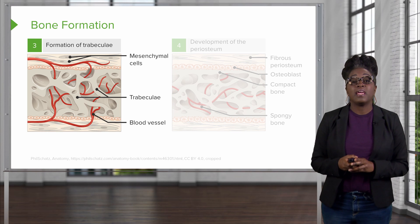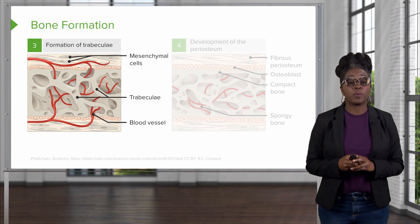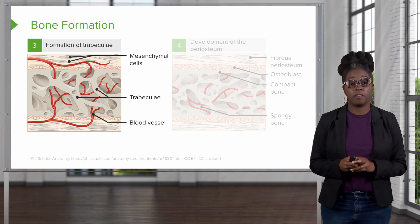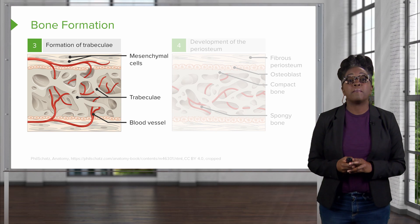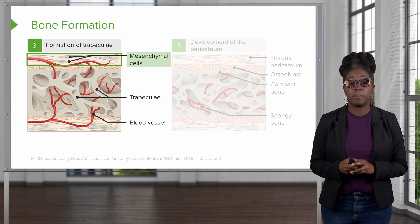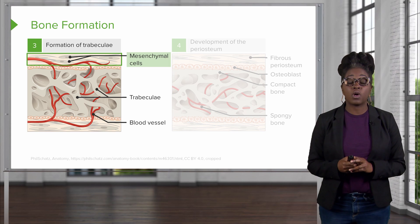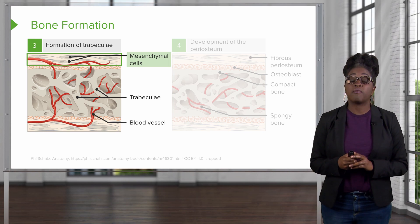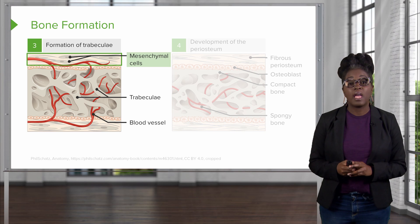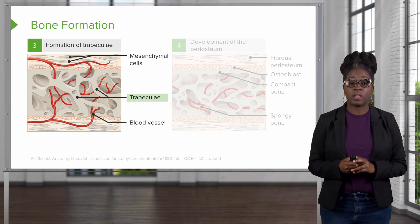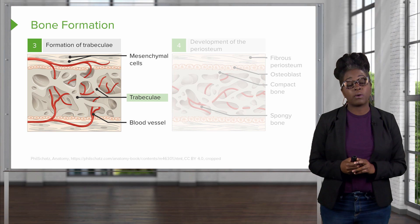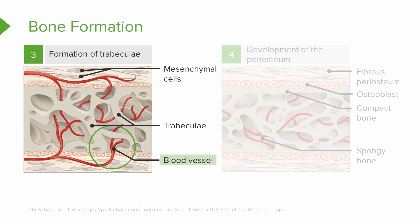The third step is the formation of the outer portion, or the periphery, of the bone. The mesenchyme is going to form a periosteum, and the mesenchymal cells are now going to be replaced with osteoblast cells. In this step, we also start to form the trabeculae, which are the little projections found in spongy bone. Blood vessels also start to infiltrate through the holes found throughout the trabeculae.